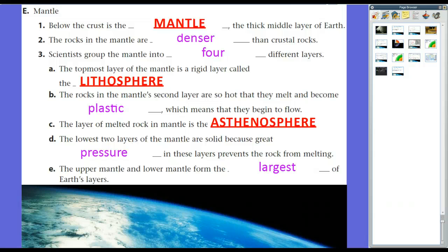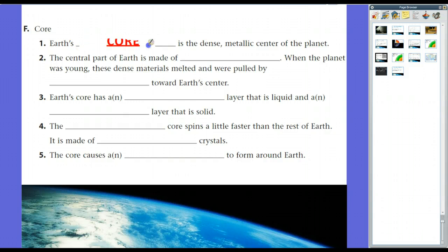So let's move on to the next part. Let's talk about the Earth's core. The Earth's core is the dense metallic center of the planet. The central part of the Earth is made of metal. When the planet was young, these dense materials melted and were pulled by gravity toward Earth's center. When we talk about the Earth-Moon-Sun system, and how the Earth was formed, according to scientists, you saw that particles came together, and they became clumped together, and gravity started pulling them toward the center. And so like we already established with the mantle and the crust, the lighter elements stayed at the top, the heavier ones formed the mantle, and the heaviest and densest elements formed the core. And the core is mainly made of nickel and iron.